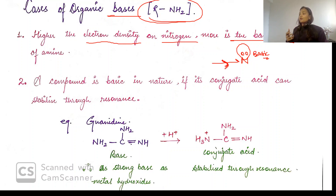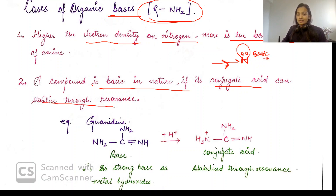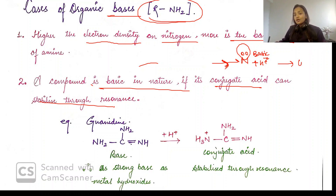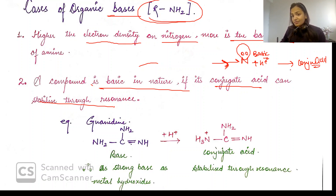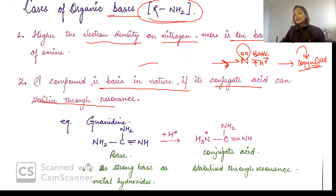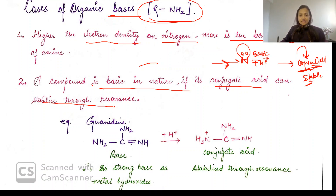For bases, you have to check the conjugate acid stability. Let's take the example of guanidine. As you can see, there are 3 nitrogens. Now which nitrogen is more basic? One lone pair is going into resonance, making that nitrogen SP2 hybridized — so only the nitrogen that is not in resonance, which is SP3 hybridized, is more basic because its lone pair is freely available.